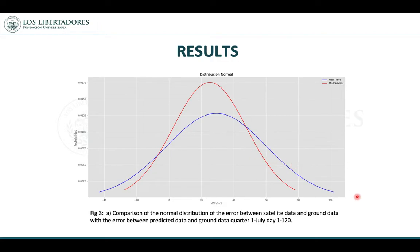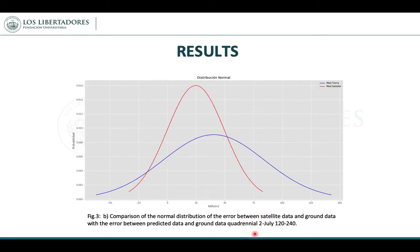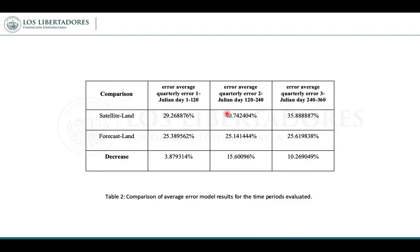We now present the results of the error comparison for each quarter. This image shows the first quarter comparison, the second quarter comparison, and the third quarter comparison. In the comparison of average error, the first quarter shows a decrease of 3.87%, the second quarter shows a decrease of 15.716%, and the third quarter shows a decrease of 10.26%.